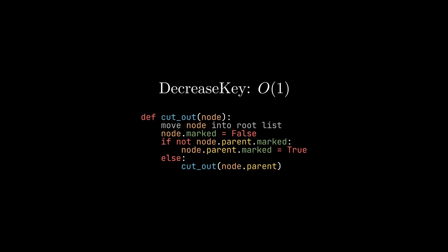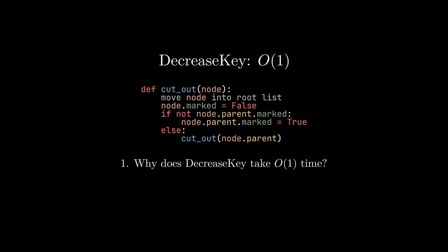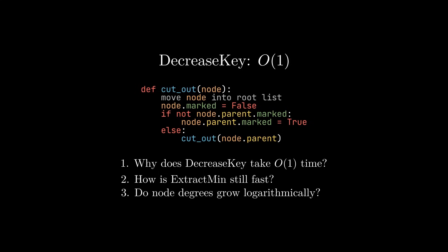Believe it or not, this is how we can implement DecreaseKey in constant time while ExtractMin remains fast. But there are a few things I haven't addressed. We sometimes cut out more than one node during a single DecreaseKey — so how is it possible we still only need constant time? And if we cut out more nodes, how can ExtractMin still be fast? And how can we be sure that node degrees only grow logarithmically? These are the questions I want to answer in the final section of this video. And yes, this is also the part where the Fibonacci numbers come in.